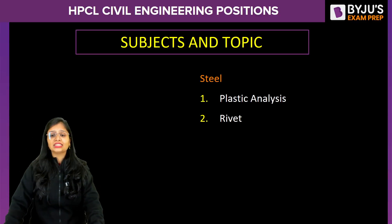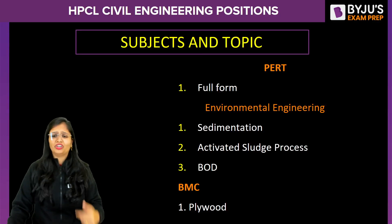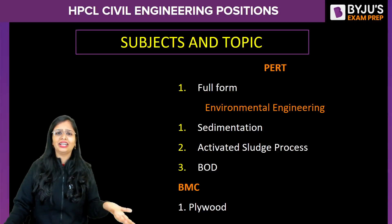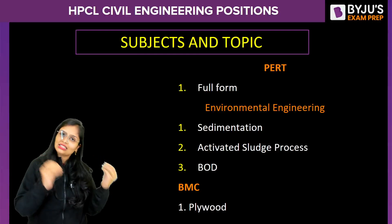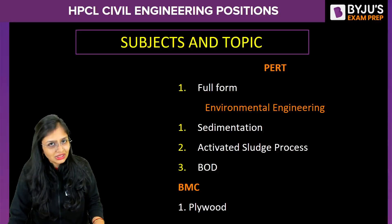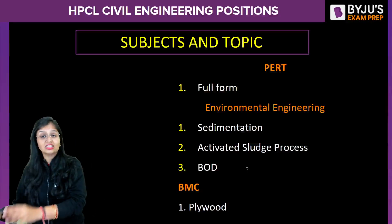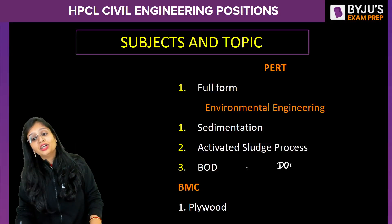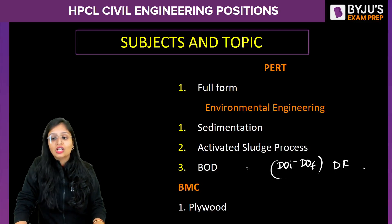In steel structures, questions from plastic analysis and rivets were asked. In PERT, a simple question about the full form was asked. In environmental engineering, questions from sedimentation — specifically the ratio of flow-through period divided by detention period — were asked. Questions from activated sludge process (ASP) were asked, which is a favorite topic in almost every exam. Questions from BOD were also asked, using the formula: DO_initial minus DO_final multiplied by the dilution factor, which gives the BOD for the required time and temperature.